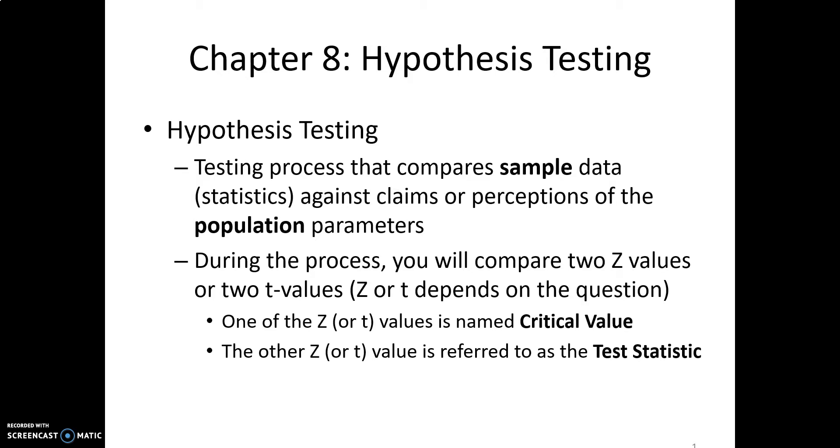So what happens in order to do that, we take a sample and we test that data against the claims or perceptions of the population values. During this process in Chapter 8, we will always have two Z values or two T values. Remember Chapter 7, Z or T depends on the question, depends if the population standard deviation is known to us.